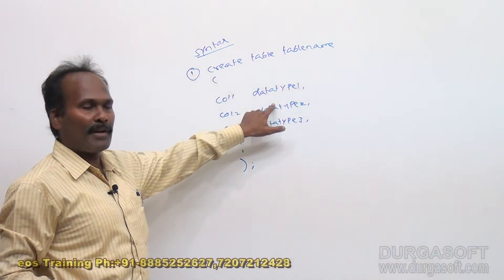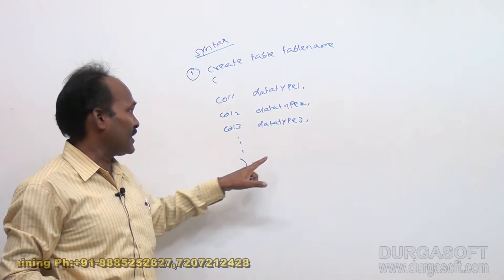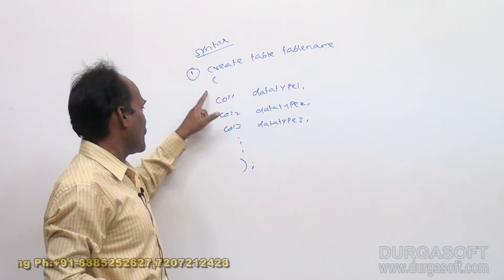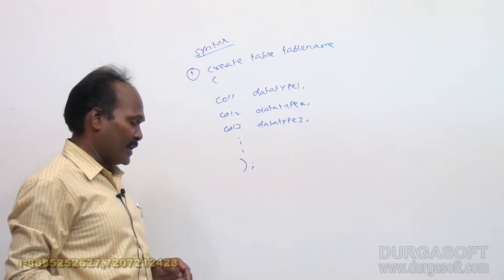At the end close the bracket and give a semicolon. Column 1 data type 1, column 2 data type 2, column 3 data type 3. At the end of the create statement, put a closing bracket and put a semicolon. Here the table will be created.